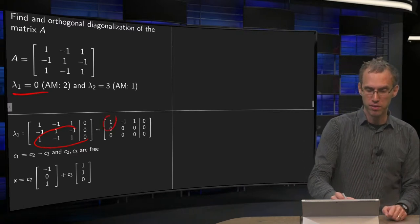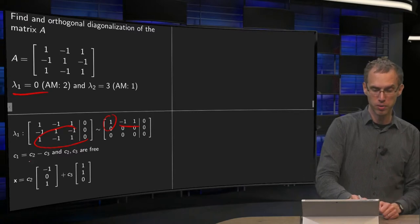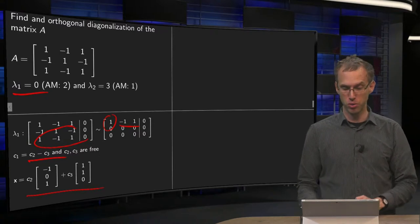We solve, we have a pivot over here, we can take c2 and c3 free, we solve for c1, and we write down the parametric vector form. So far, so good, there is our solution.